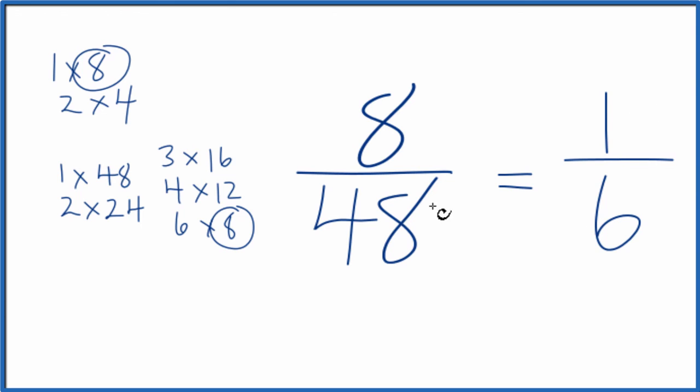These are equivalent. If you divide 8 by 48 and 1 by 6, you'll get the same number. It's just this has been reduced or simplified down to 1 over 6.